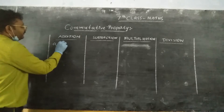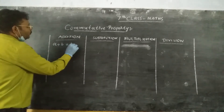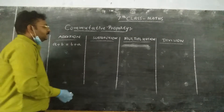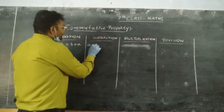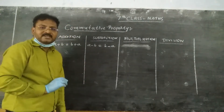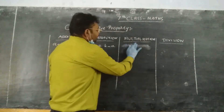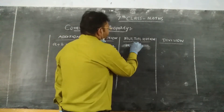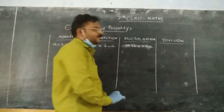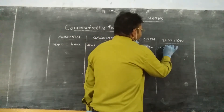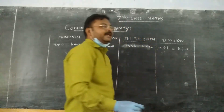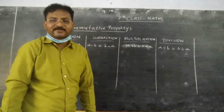In commutative property under addition, if a plus b is equal to b plus a, then commutative property will be satisfied. In subtraction, if a minus b is equal to b minus a, commutative property will be satisfied. Under multiplication, if a into b is equal to b into a, commutative property will be satisfied. Under division, if a divided by b is equal to b divided by a, commutative property will be satisfied.